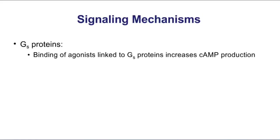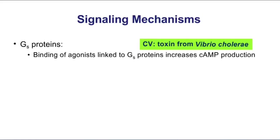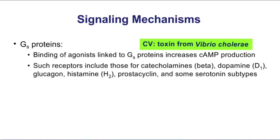This is actually similar to the action of the toxin from Vibrio cholerae — cholera toxin is going to increase cyclic AMP levels. When you relate G-proteins to pharmacology, you have to tie the G-protein to its receptor. There are a lot of receptors that use GS pathways, but betas are the most important to focus on. The rule is: all betas are GS — that would be beta-1, beta-2, and beta-3 receptors, which all work through GS proteins.